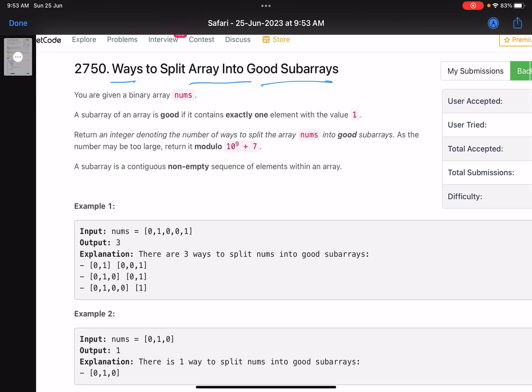The problem statement says that you are given a binary array nums, meaning you have only zeros and ones. A subarray of an array is good if it contains exactly one element with the value 1. Return an integer denoting the number of ways to split the array nums into good subarrays. As the number may be too large, return it modulo 10^9 plus 7. A subarray is a contiguous non-empty sequence of elements within the array.